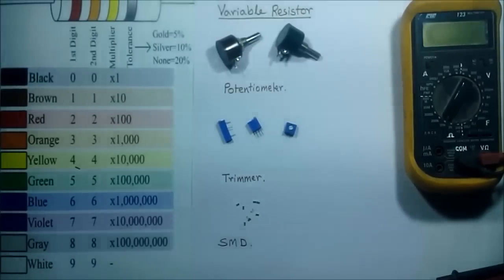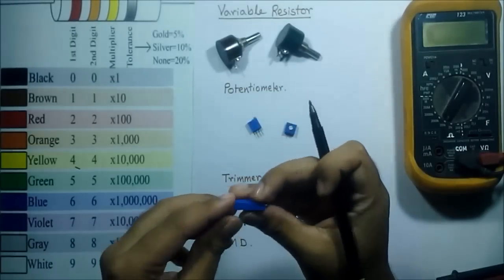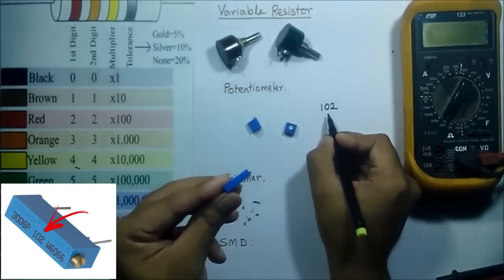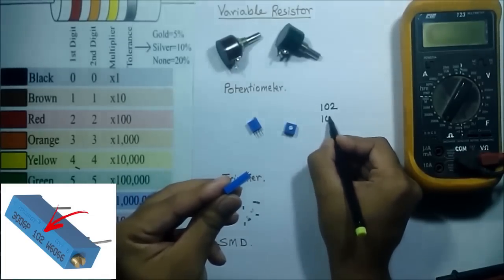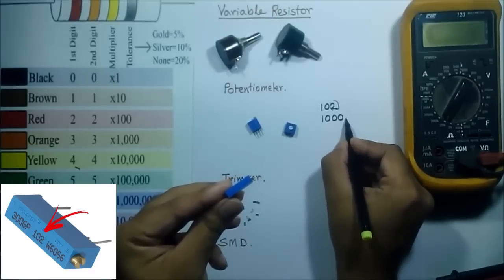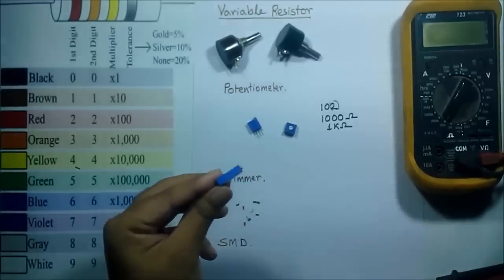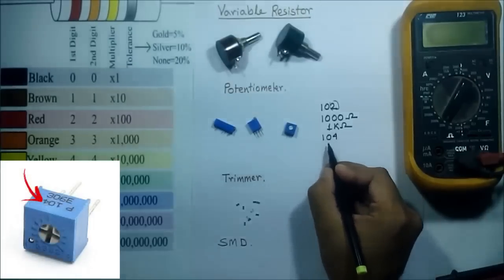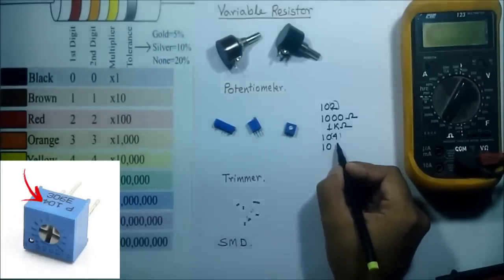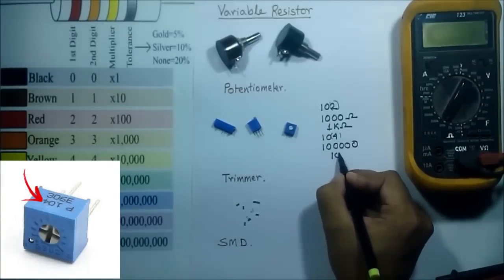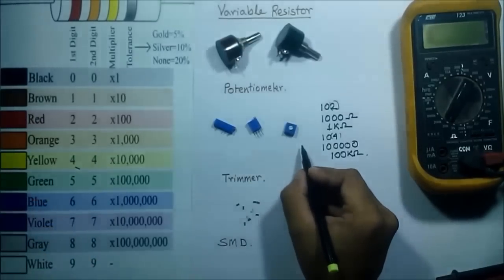To find the maximum resistance value of a trimmer, consider the value written on the top. Suppose there is written '102' — the first two digits indicate the value and the last digit tells the number of zeros. So here there are two zeros, giving a resistance value of 1000 ohm, which is 1 kilo ohm. If there is written '104', that gives 100 kilo ohm. This trimmer is half watt.